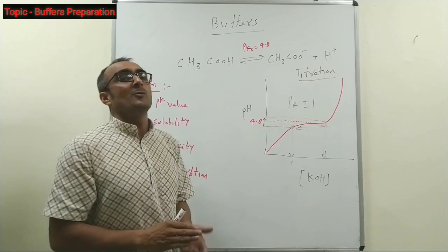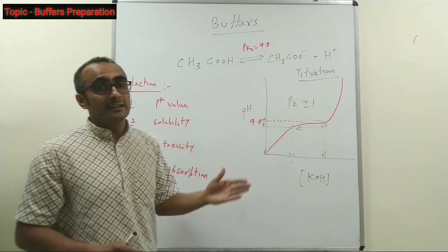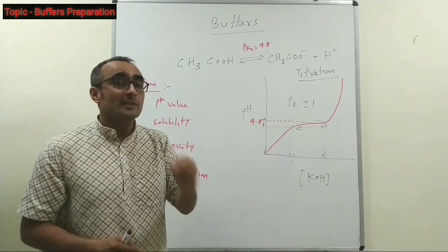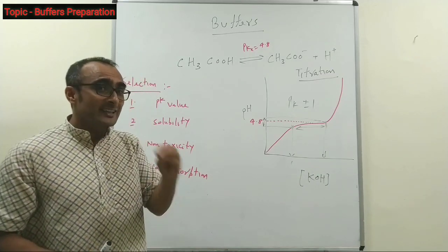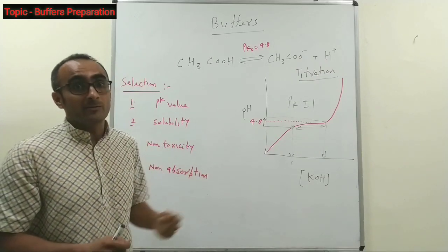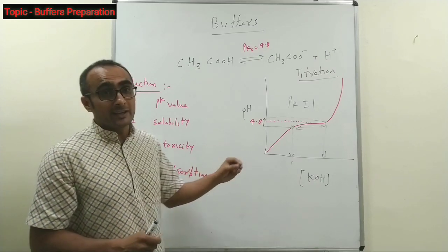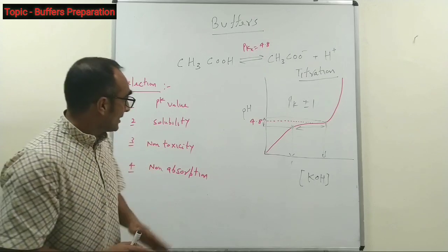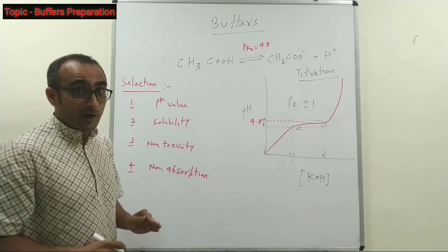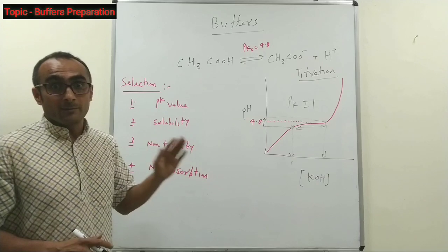When you select a buffer, there are a few points to remember. First is the pKa value. For example, if you need a solution of pH 7, you cannot take any arbitrary compound — you have to take a compound with a pKa value near to pH 7. Similarly, if you want to make a buffer in the acidic range around pH 5, you have to select a compound with a pKa value around your desired pH. This is a very important point: select an appropriate compound with a pKa value near about your desired buffer pH.